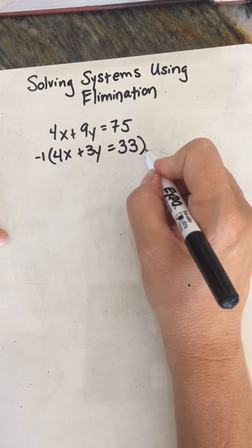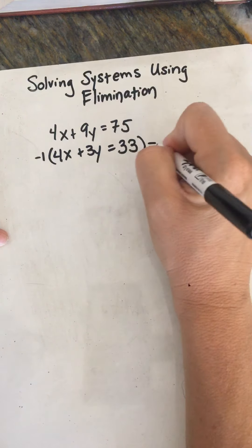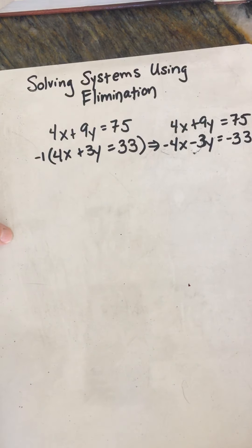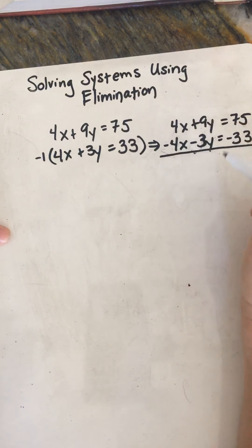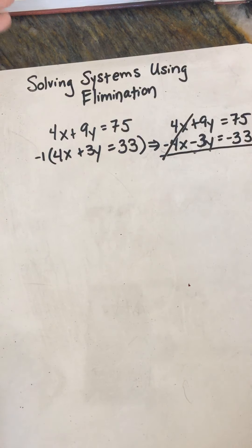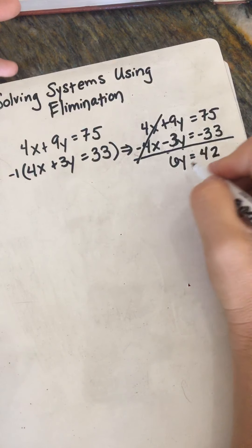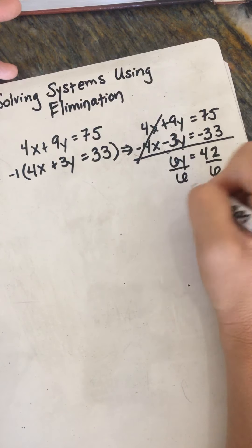And so if we took negative 1 and multiplied through just this equation, we'd get negative 4x minus 3y equals negative 33. And then your 4x plus 9y equals 75 would remain. And then if we add these two equations together, look what happens to the x's. They are eliminated. And then 9y minus 3y is 6y equals 75 minus 33 is 42.